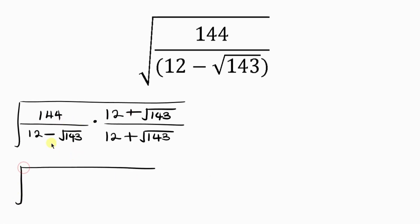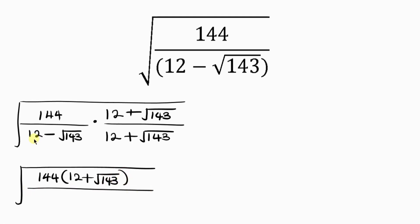Now let's multiply. We have the square root of 144 times 12 plus the square root of 143, which can be written as 144 times 12 plus the square root of 143, all over 12 minus the square root of 143 times 12 plus the square root of 143.